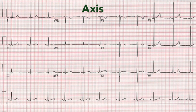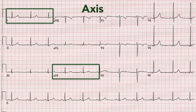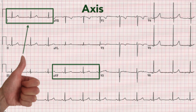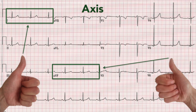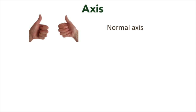One quick method to determine the axis is to look at leads I and AVF. Point your left thumb up or down to match lead I and your right thumb to match AVF. If both thumbs point up, then the axis is within the normal range.